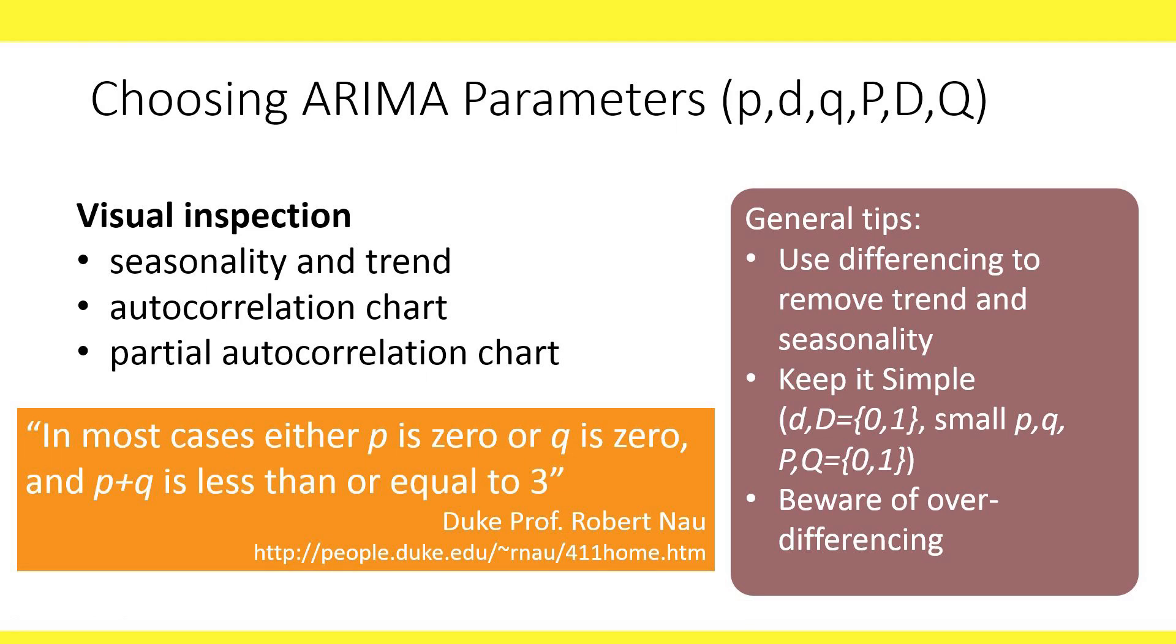Professor Robert Nau gives the following rule of thumb: in most cases, either P is zero or Q is zero, and P plus Q is less than or equal to three. Choosing the ARIMA parameters is beyond the scope of this course. Instead of doing this manually, let's look at automated selection.